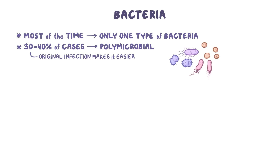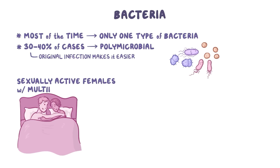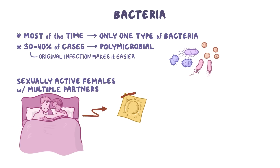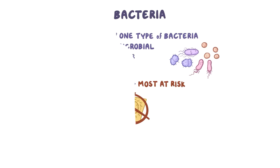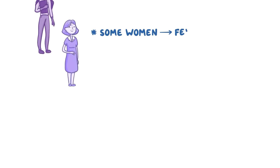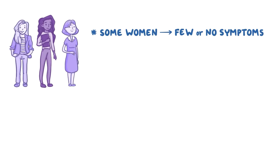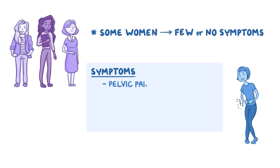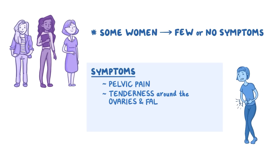Because of the relationship with chlamydia and gonorrhea infections, sexually active females — particularly those who have multiple sexual partners and don't use condoms — are at most risk of developing PID. Some women will have few or no symptoms of PID. When there are noticeable symptoms, they include pelvic pain, tenderness around the ovaries and fallopian tubes, fever, and abnormal vaginal discharge.